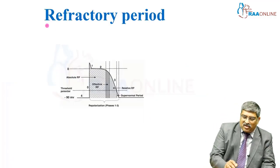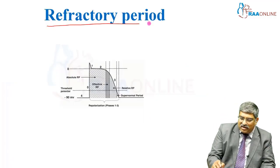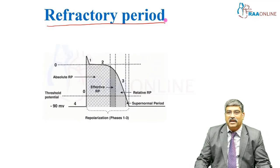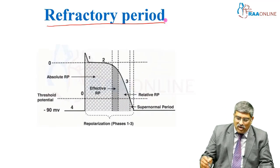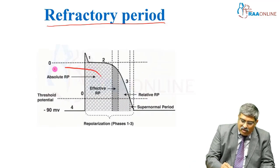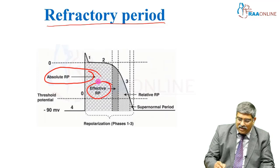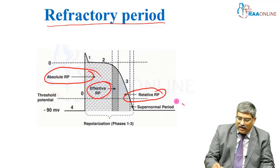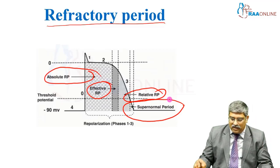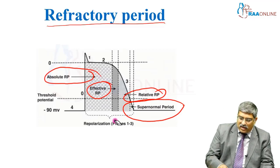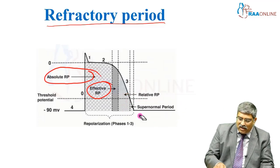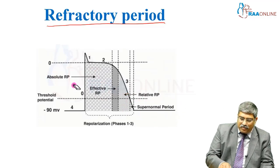There is another terminology called the refractory period. This includes the absolute refractory period, effective refractory period, relative refractory period, and super normal period. Let us look at each refractory period individually.